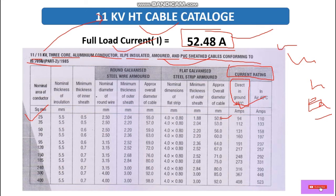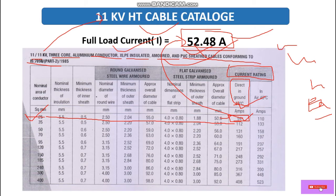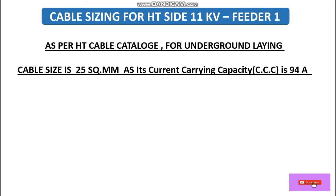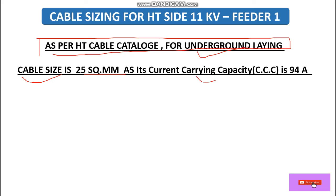For underground installation, a 25 sq mm cable can carry 94 amperes. That means the current carrying capacity of a 3-core aluminium XLPE 25 sq mm cable laid underground is 94 A. As per the HT cable catalogue for underground laying, the cable size selected is 25 sq mm aluminium conductor, 3-core, with a current carrying capacity of 94 amperes.